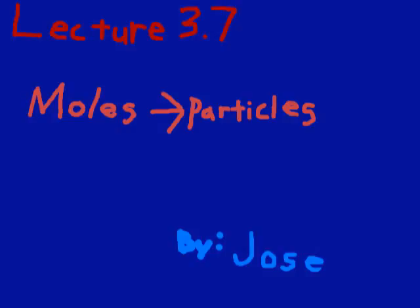Lecture 3.7: Moles to Particles. Our focus today is the conversion pathway: grams of substance A to moles of A to particles of A.